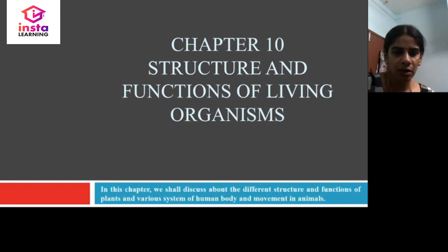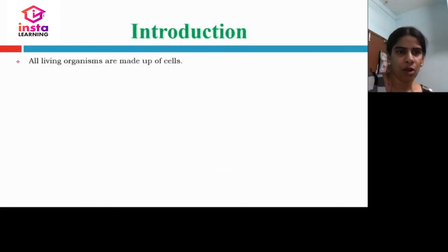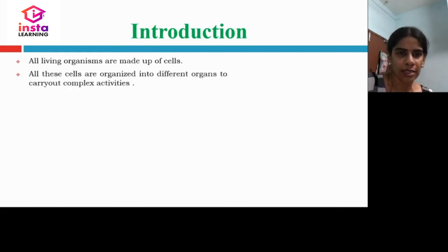In this chapter, we shall discuss about the different structures and functions of plants and also in the human body, with the help of movement in animals. Let us go into the chapter. We know that all living organisms are made up of cells. All these cells are organized into different organs to carry out complex activities.